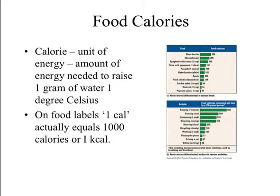Our bodies get the fuel needed to produce energy from the food we eat. If you look on the back of any food item, the nutrition label tells you the calorie count. A calorie is a unit of energy — in the chemistry lab, a calorie is the amount of energy needed to raise one gram of water one degree Celsius. On food labels, a Calorie with a capital C actually equals a thousand laboratory calories, or what we call a kilocalorie.